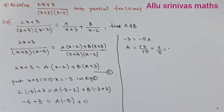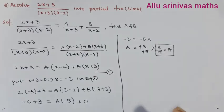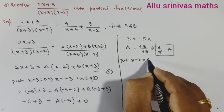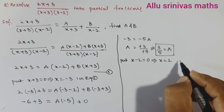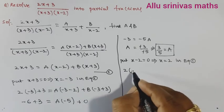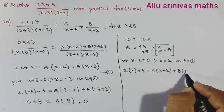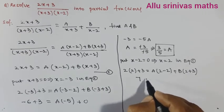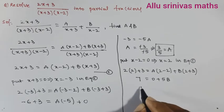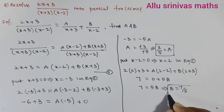This is the required value of A. Next we have to find the value of B. Let us take the second factor: x − 2 = 0, so x = 2. Substituting in equation 1: 2(2) + 3 = A(2 − 2) + B(2 + 3). That gives 4 + 3 = 7, A times 0 is 0, and 2 + 3 = 5, so 7 = 5B, giving B = 7/5.